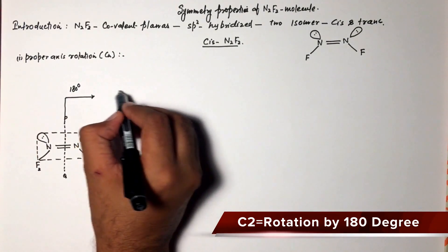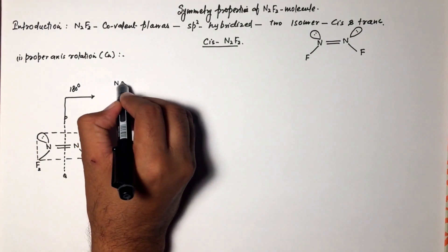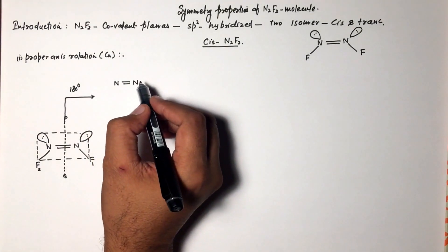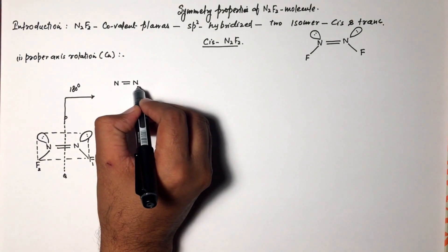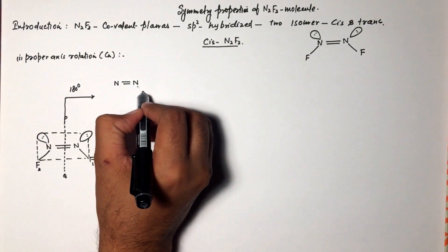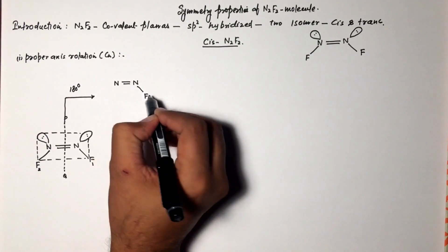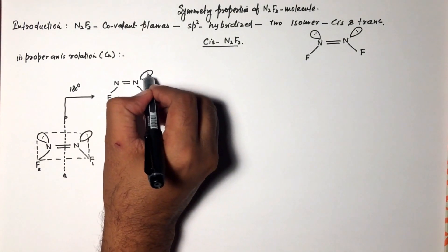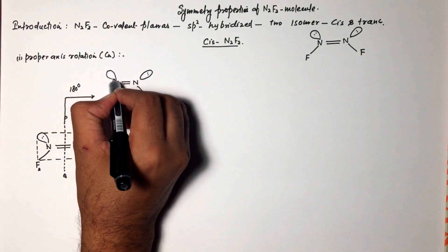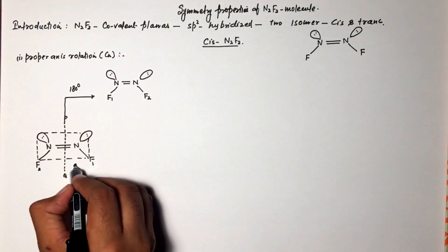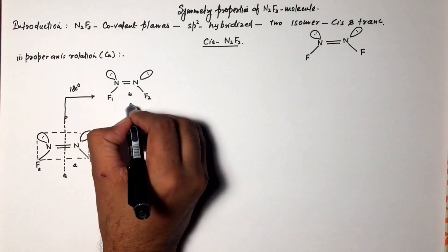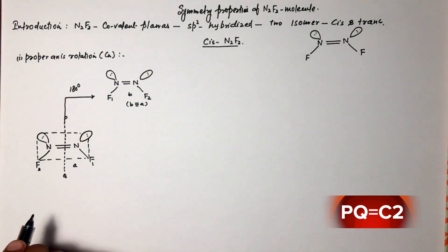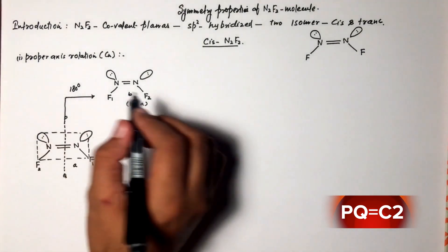we get a new configuration of the molecule. We see that the new configuration is equivalent to the original one. So this pq axis is a proper axis of rotation; the C2 operation is present in this molecule.